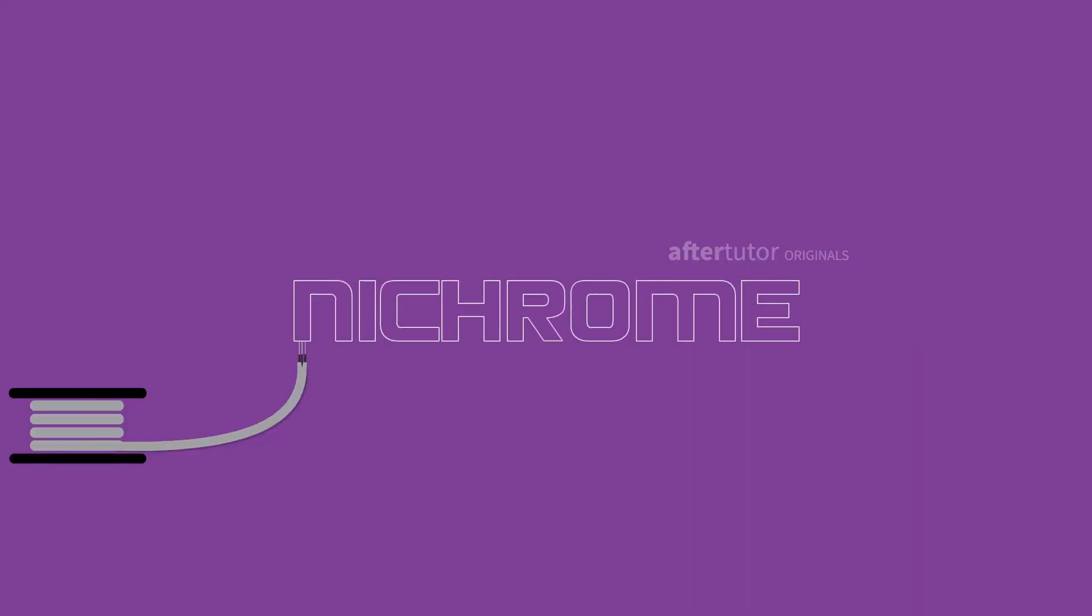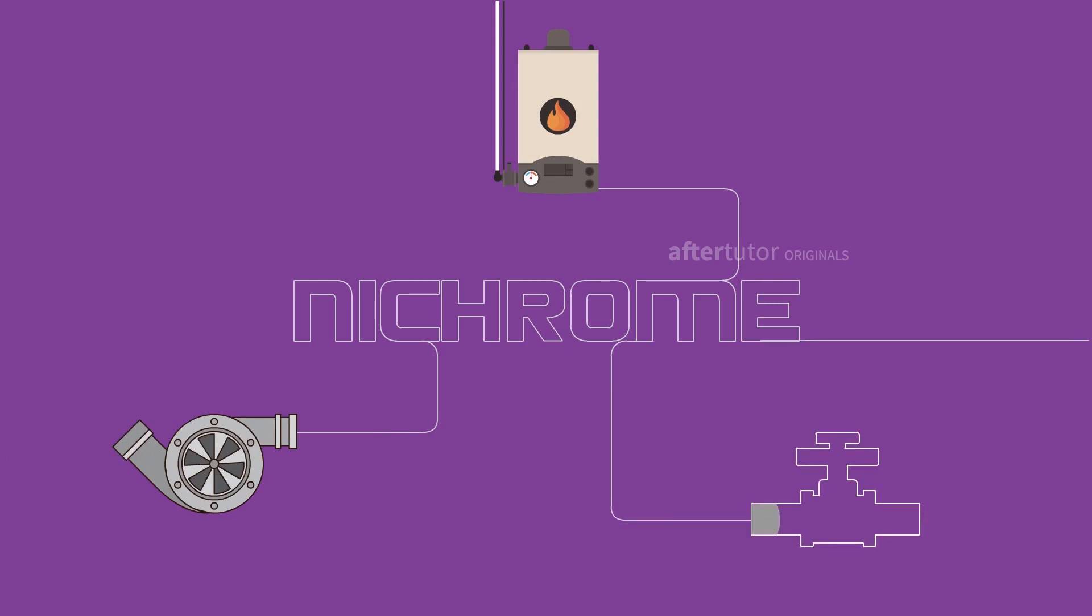How about nichrome? Nichrome is the combination of nickel and chromium. It has a high melting point and high electrical resistance. Nichrome is used in making parts of boilers, gas turbines, and valves.